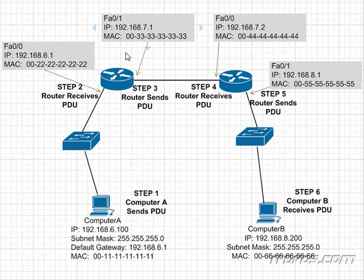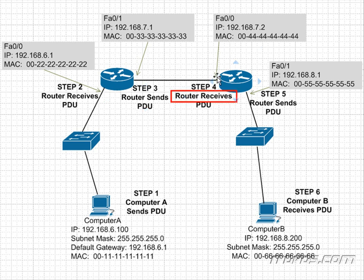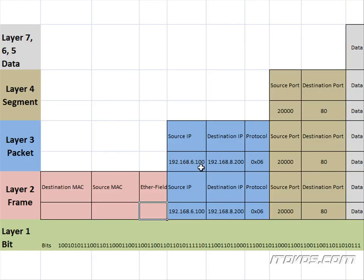It's going to forward it out FastEthernet0/1, and its routing table is going to know where to forward it to. In this case it needs to forward it to the next router on FastEthernet0/0 with IP address 192.168.7.2 and MAC address 00-44-44. If this router does not know the MAC address of that port, it will actually send an ARP request and repeat the whole ARP process to find the MAC address. Now we're at step three — we're going to re-encapsulate this frame. Our packet is going to stay the same; the source IP is still 192.168.6.100 and the destination IP is still 192.168.8.200.